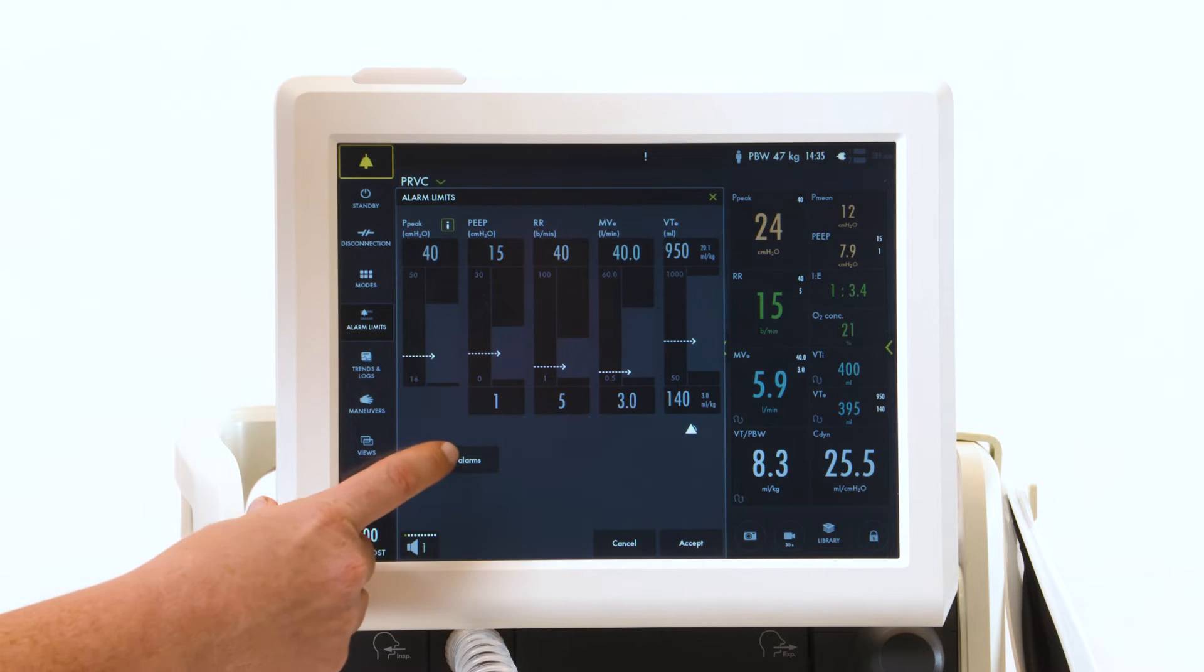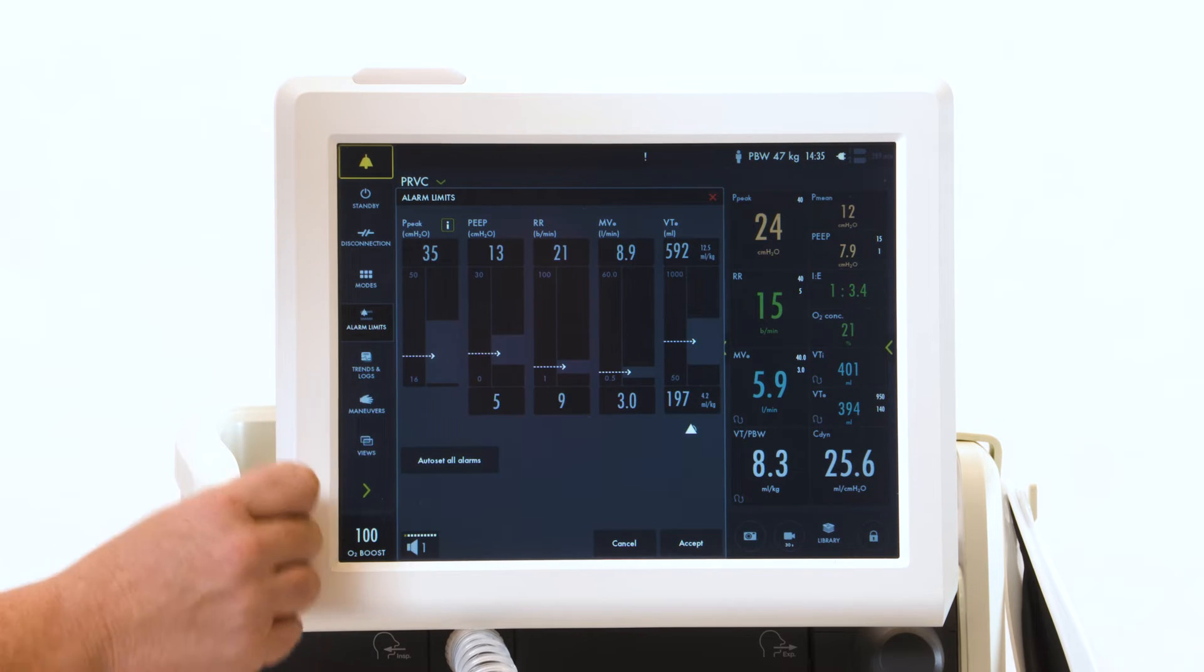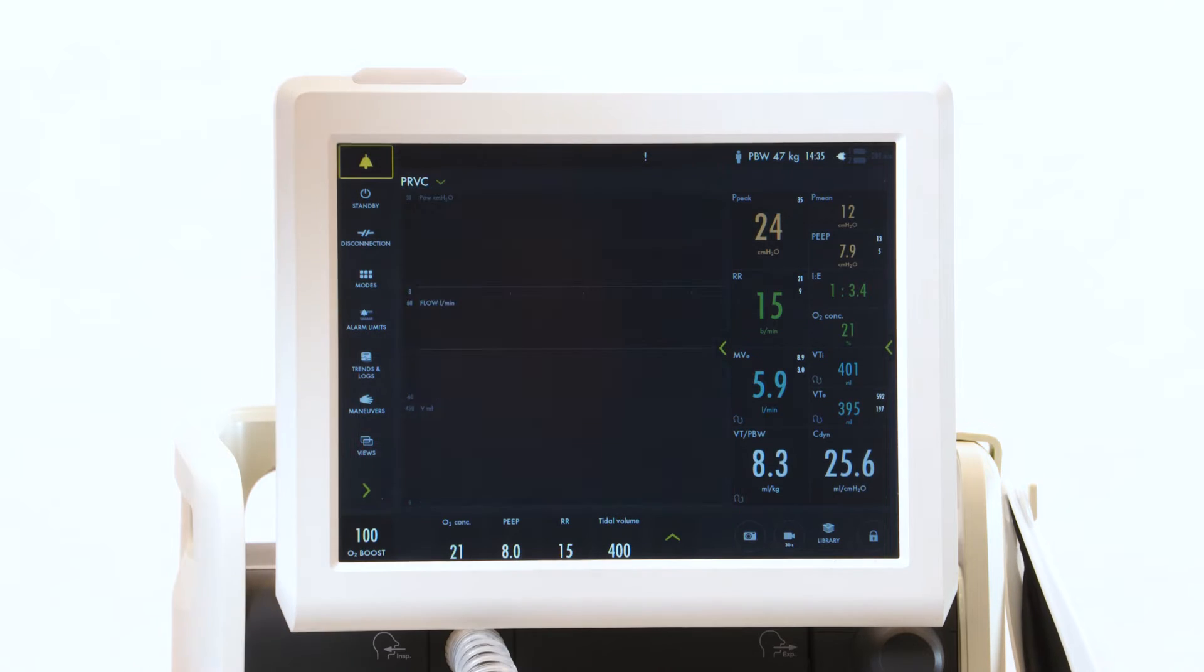There is also an auto-set feature available in control modes of ventilation for the alarms. They will set the upper and lower alarm limits based on what your patient is currently doing. It is located here, and the ventilator will make the adjustment. If you're happy, you then hit accept.